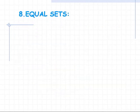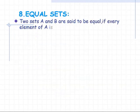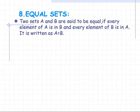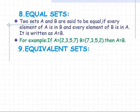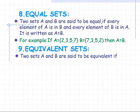Equal sets: two sets A and B are said to be equal if every element of A is in B and every element of B is in A. It is written as A = B. For example, if A = {2, 3, 5, 7} and B = {7, 3, 5, 2}, then A = B.